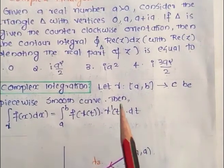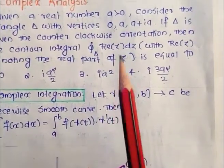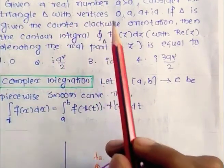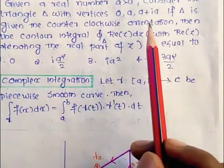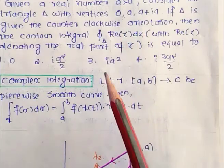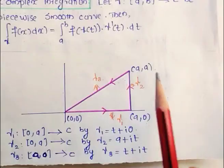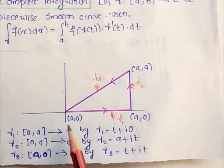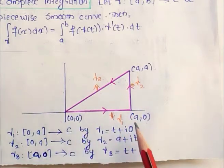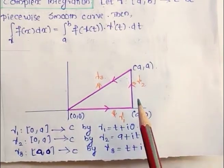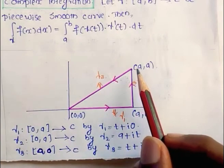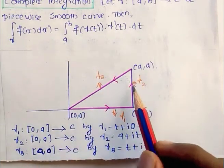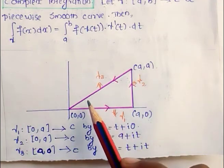Next we want to analyze the region of integration. The region of integration is a triangle with vertices 0, a, and a plus ia, so we want to draw it. The region is a triangle with vertices (0,0), (a,0), and (a,a). We label this line as gamma 1, this line as gamma 2, and this line as gamma 3.